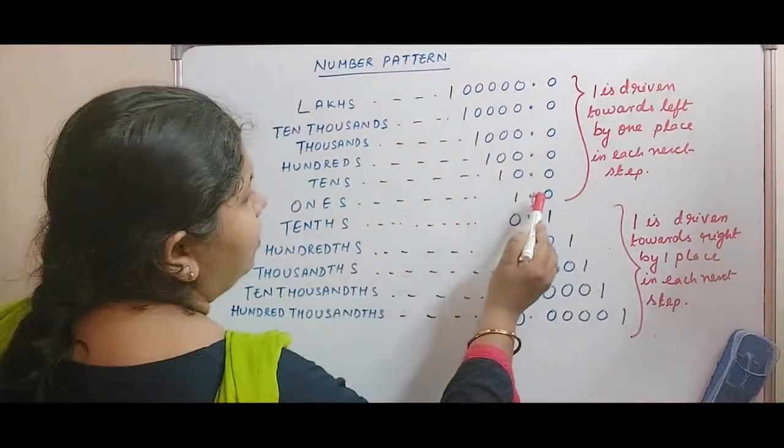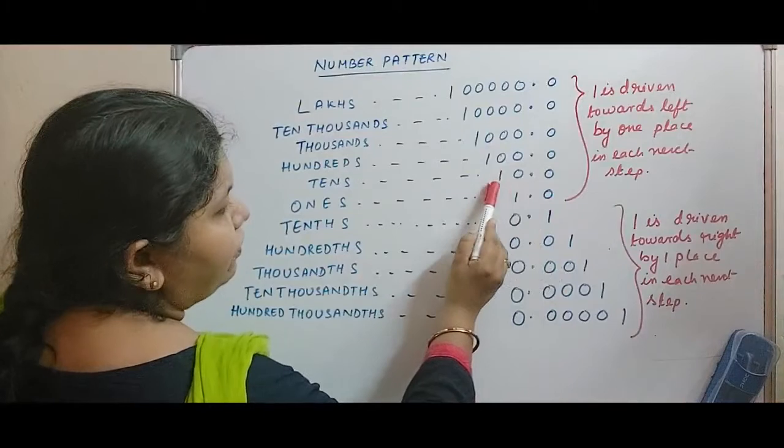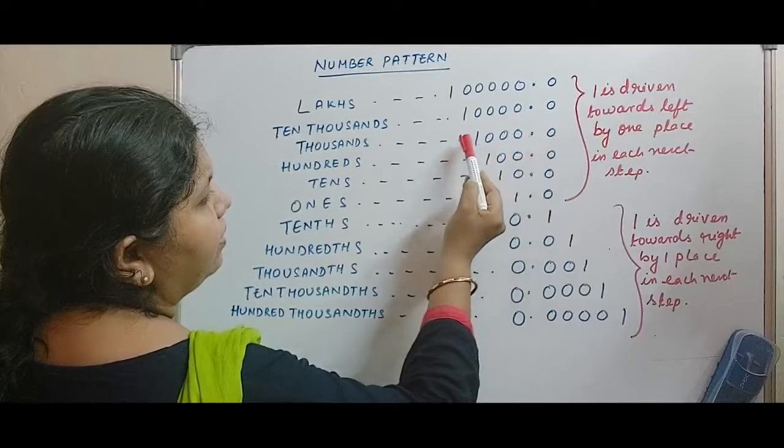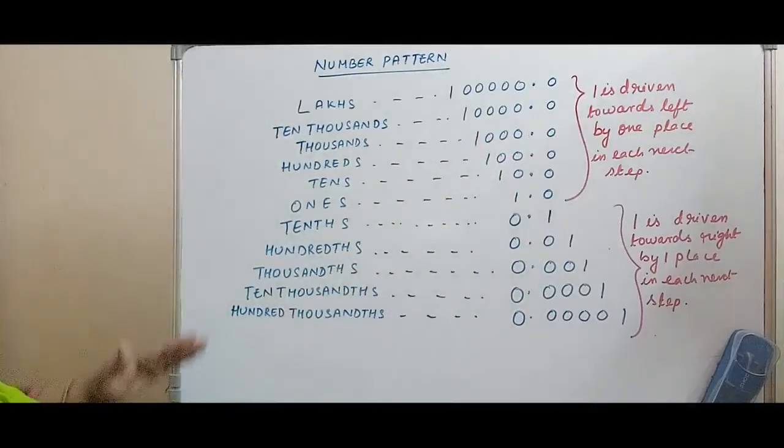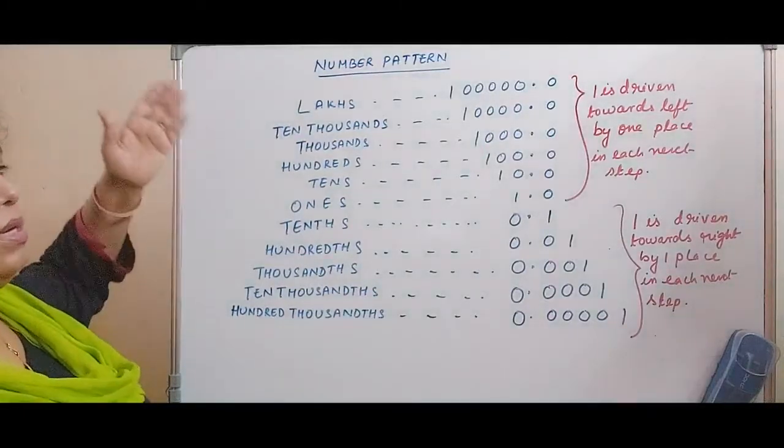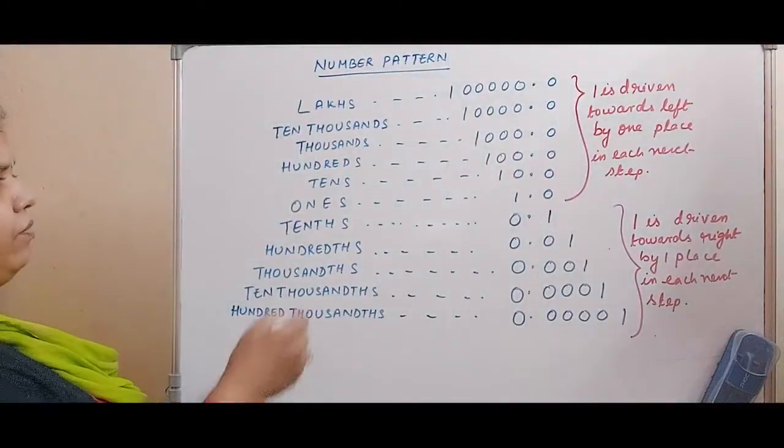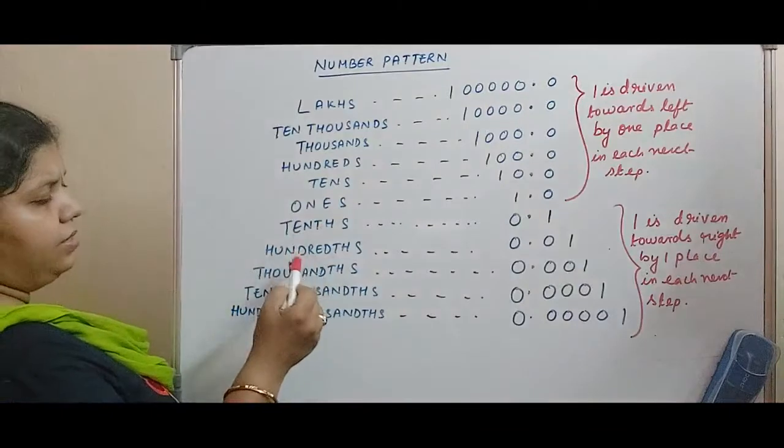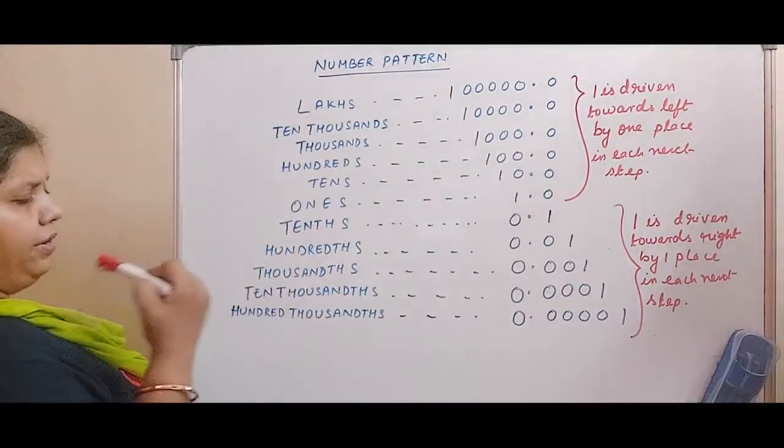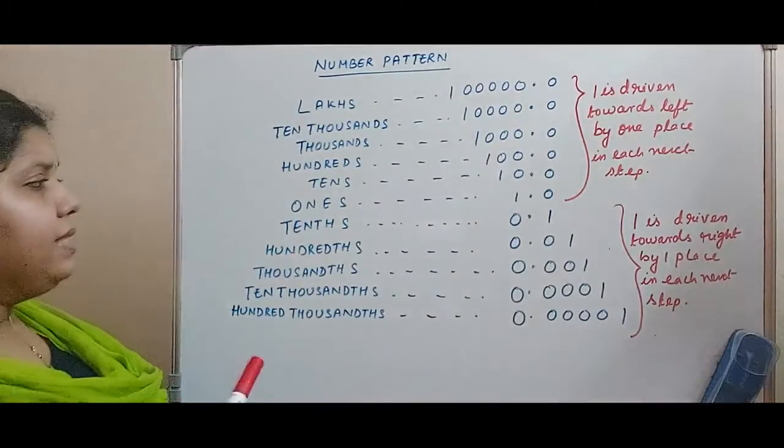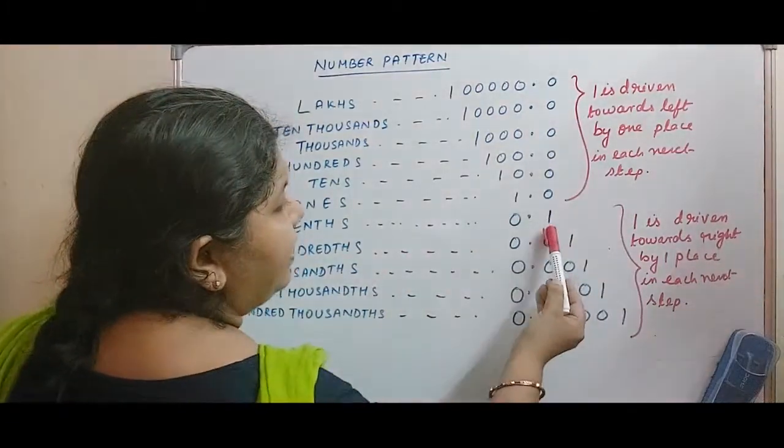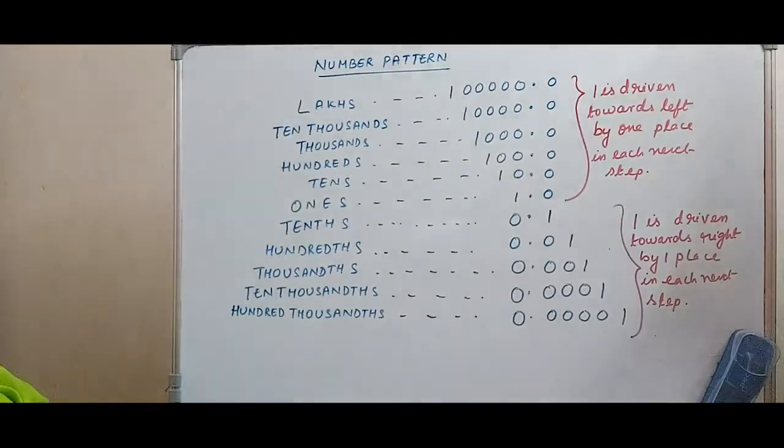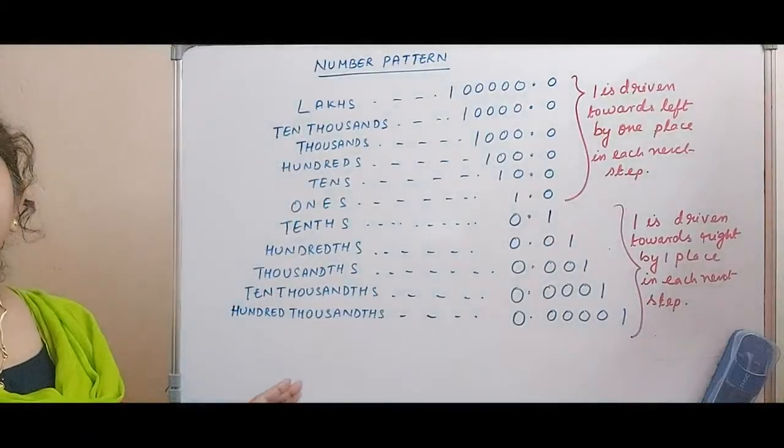Like here you see 1.0, now in the next tens place you see one has got shifted by one place towards left. In the above, you can see one has shifted further, then here also one has shifted further towards left. So this continues as you will get bigger and bigger places. Similarly when we move below ones, what happens? We have tenths, hundredths, thousandths, ten thousandths, hundred thousandths. So what exactly is happening here? You can see the one is driven towards right by one place in each of the next step. So this is one pattern that you need to understand.